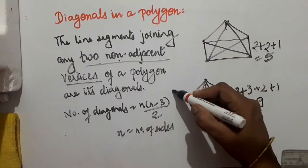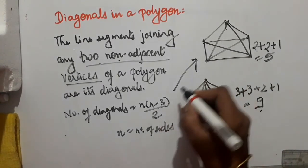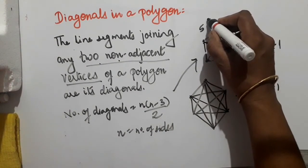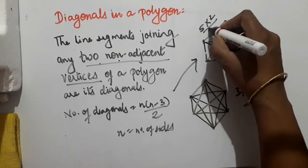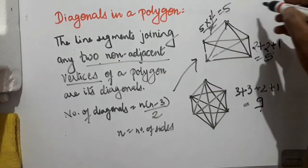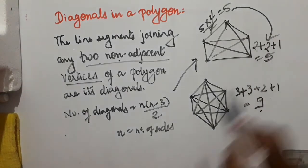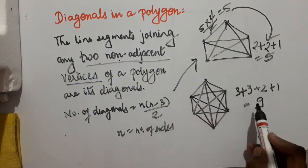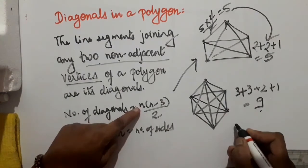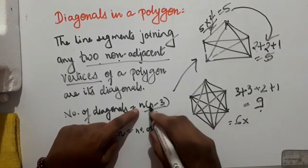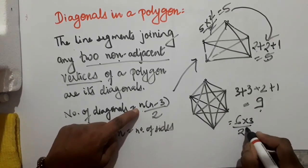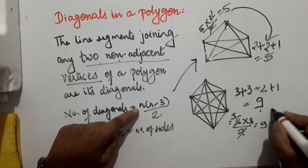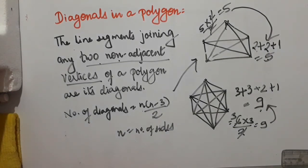Let's verify for the pentagon: 5 × (5 − 3) ÷ 2 = 5 × 2 ÷ 2 = 5. Correct. For the hexagon: 6 × (6 − 3) ÷ 2 = 6 × 3 ÷ 2 = 9. Verified. So the formula for finding the number of diagonals in a polygon is N × (N − 3) ÷ 2, where N is the number of sides.